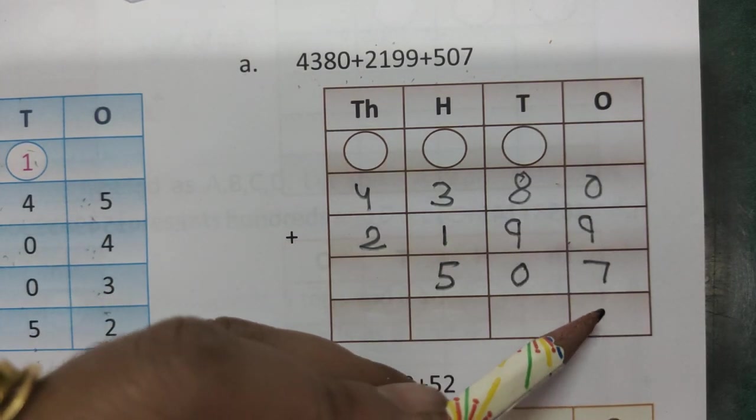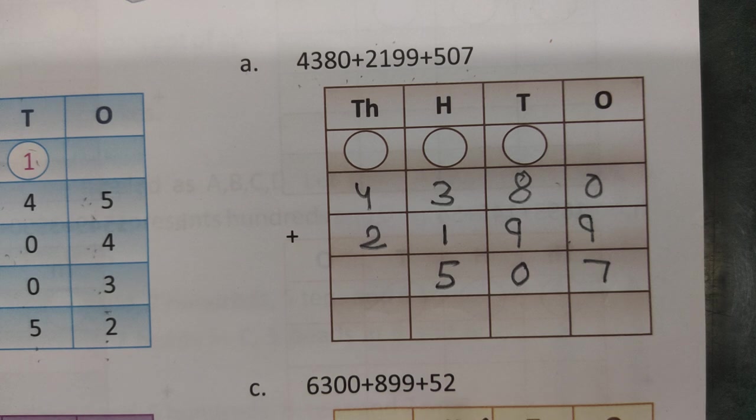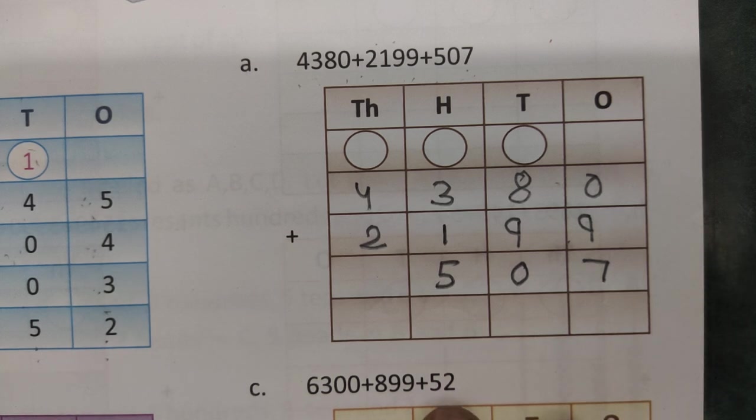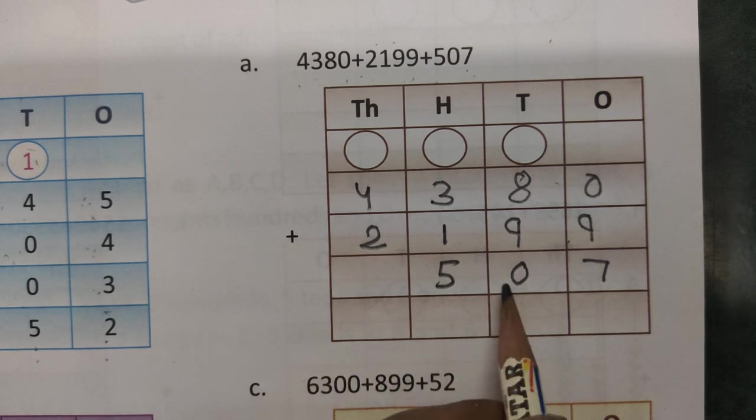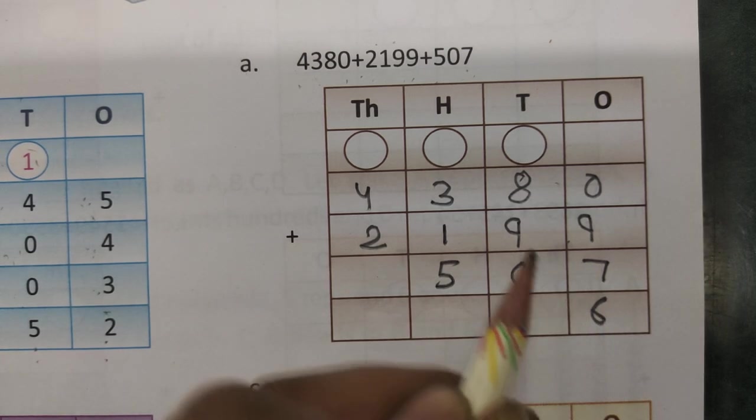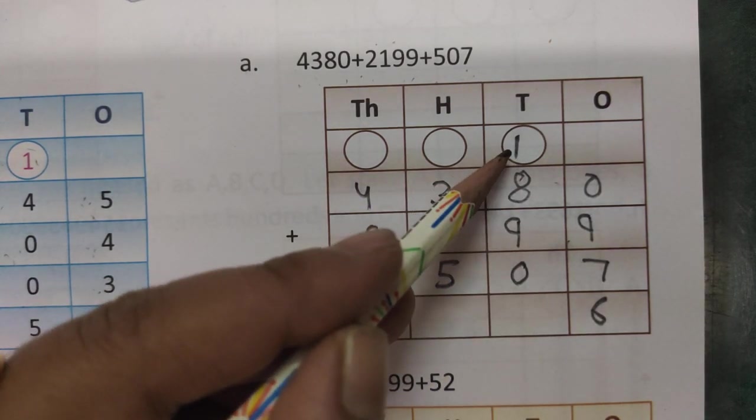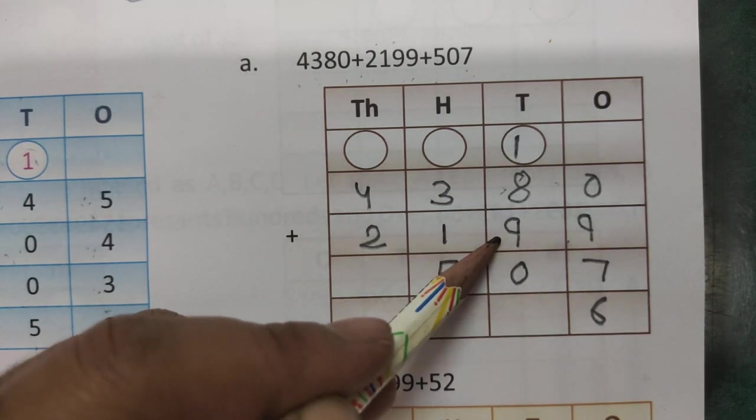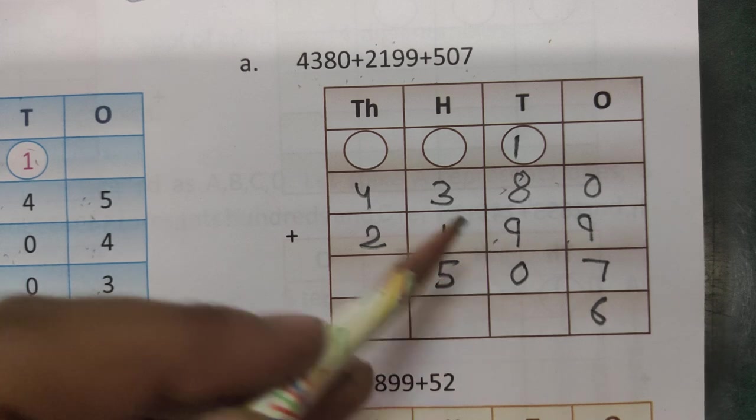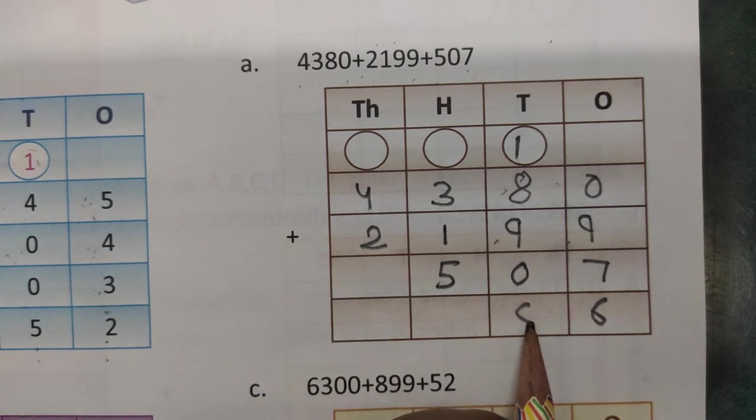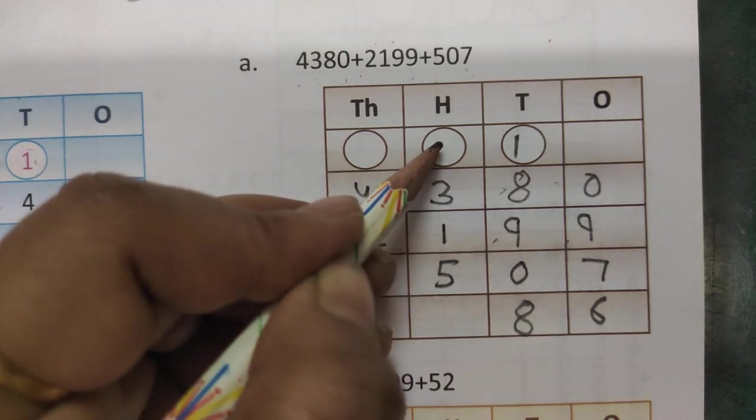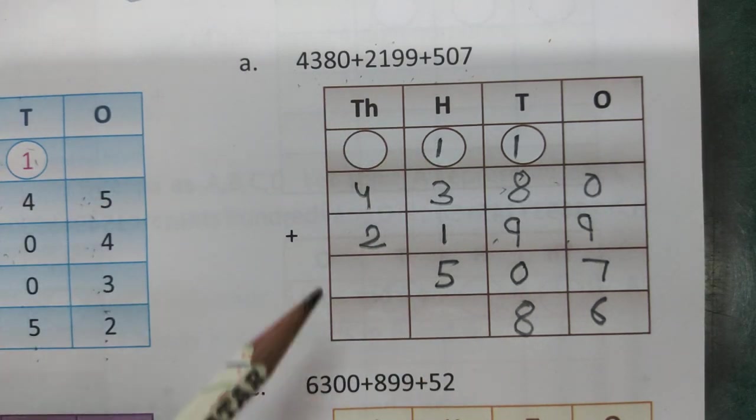Let's start adding the following number: 0, 9 and 7. Count the number 9 plus 7. Count the number 10, 11, 12, 13, 14, 15, 16. So 6 is 1 place and 1 carry over 10 place. Add this number 1 and 8 is 9, 9 and 9. Count the number 9 and 9 is 18. 8 and 1 carry over 100 place.